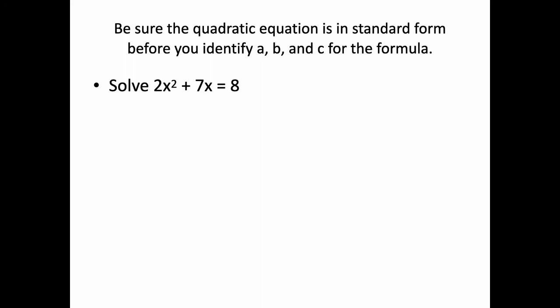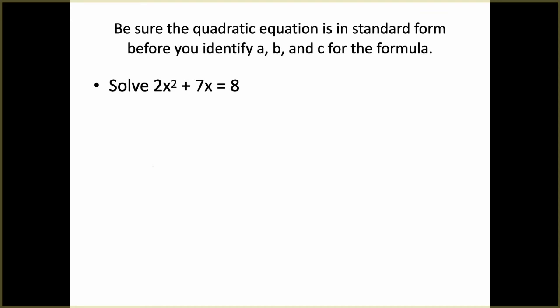For our second quadratic, we have 2x squared plus 7x equals 8. We want to use the quadratic formula, but first the equation must be in standard form equal to 0. We cannot identify a, b, and c otherwise. So we subtract 8 from both sides and get 2x squared plus 7x minus 8 equals 0. Now it's in standard form.